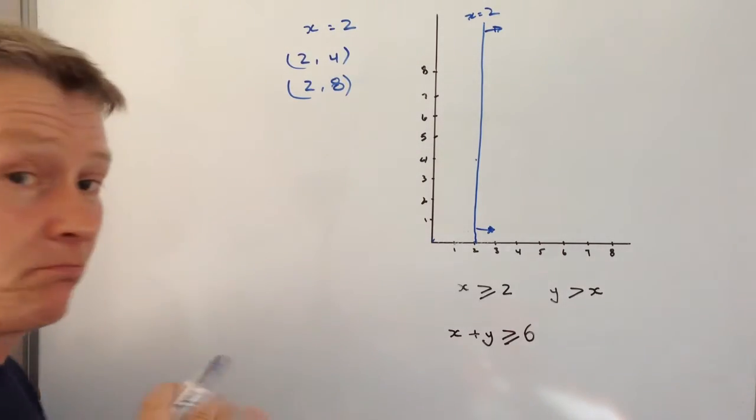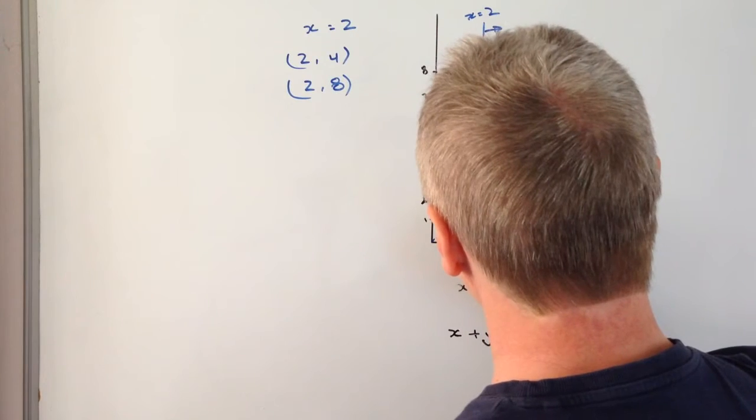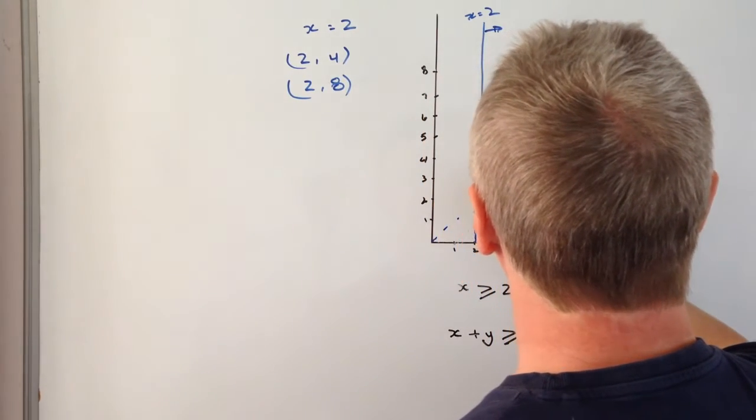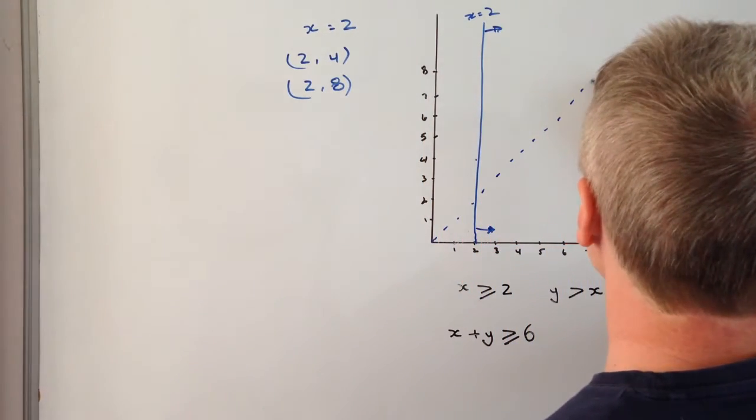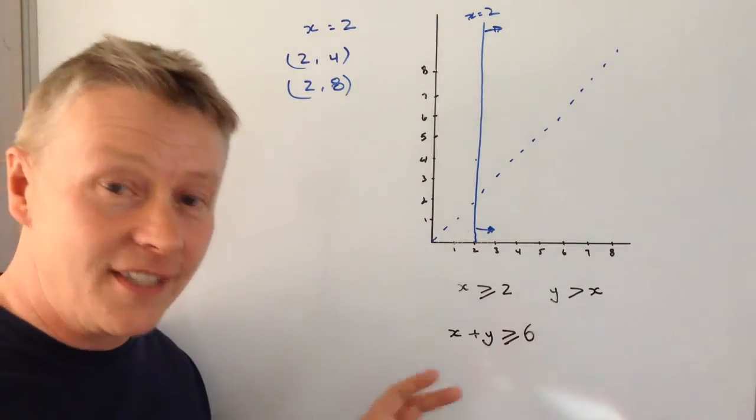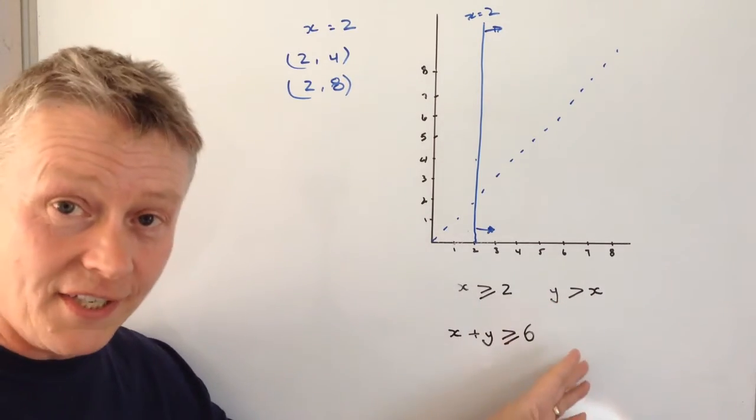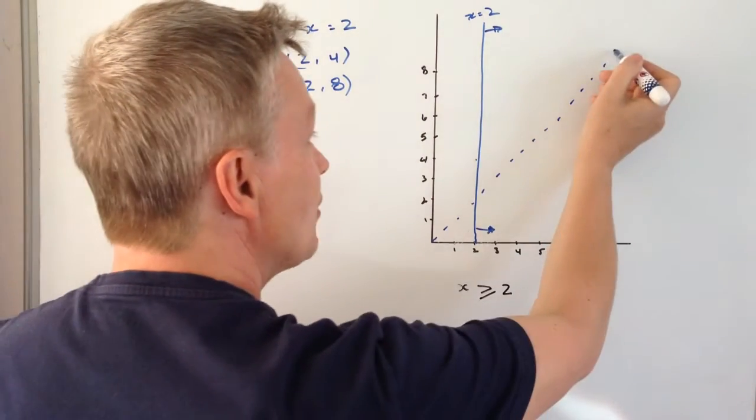So again, I'm going to turn my back to the board. So I'm just going to move this along like that. Hopefully you can see this okay. And I've drawn that as a dash line. I'm also going to say that because y is greater than x, I'm going to put my arrows here.